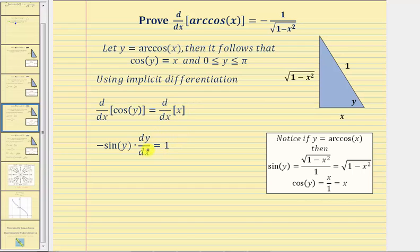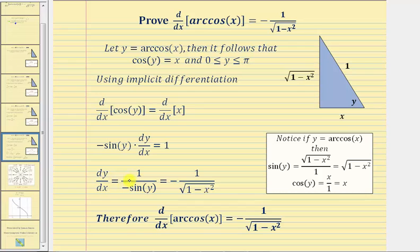Now solving for dy/dx, we divide both sides by negative sine y. So we have dy/dx equals one divided by negative sine y. We know our derivative function value is going to be negative, and we know that sine y equals the square root of the quantity one minus x squared. Therefore, dy/dx equals negative one divided by the square root of the quantity one minus x squared.